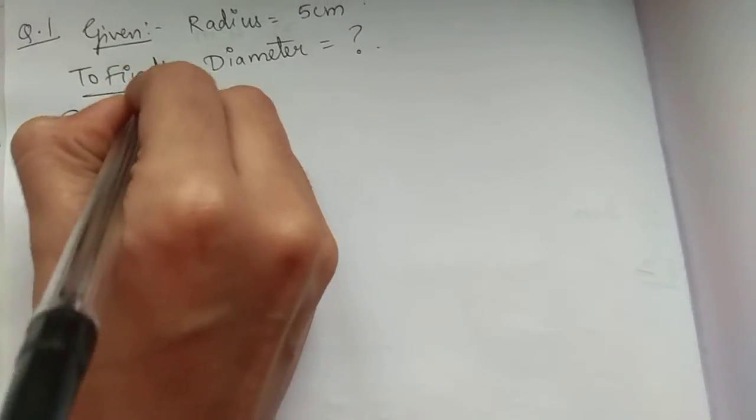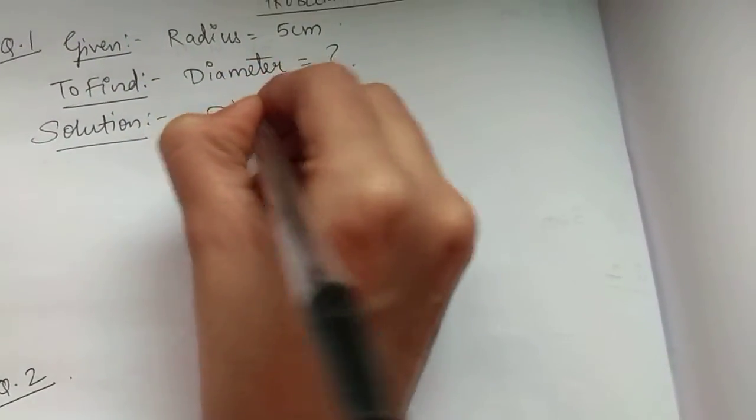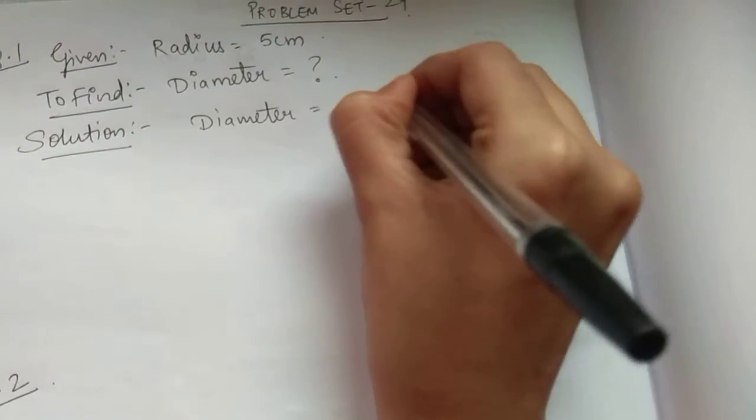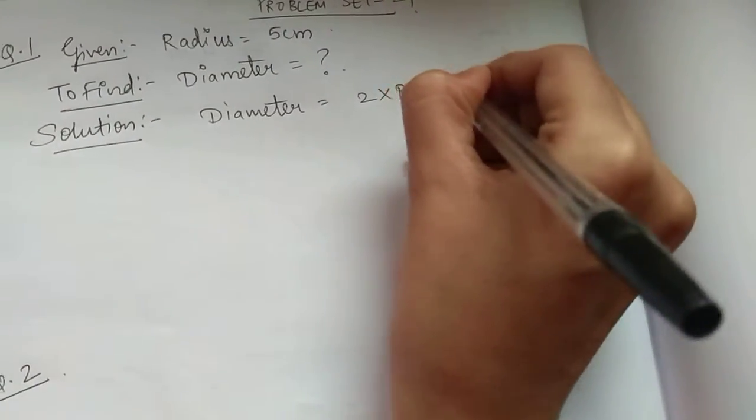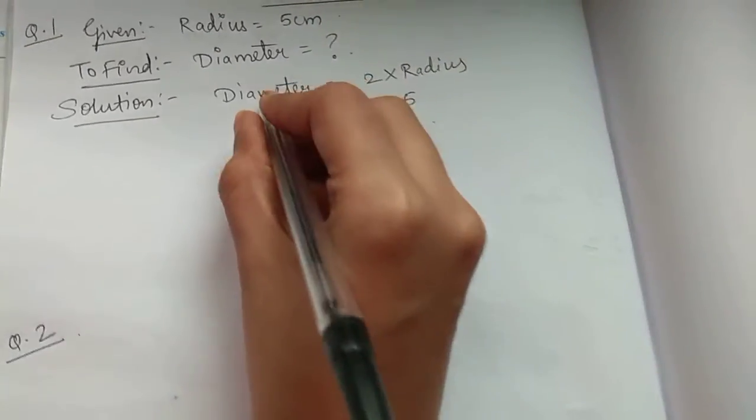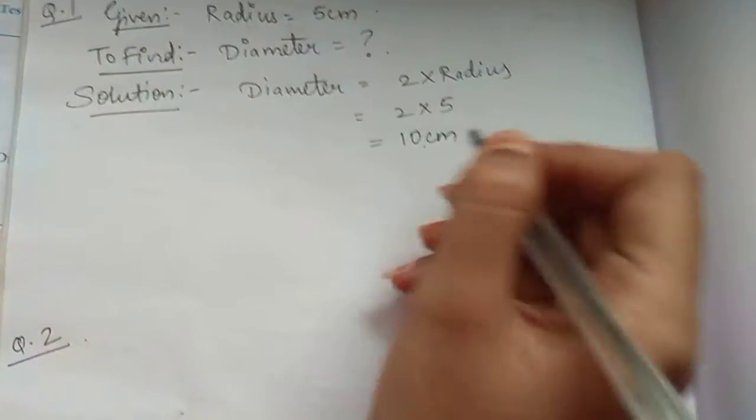Solution. In solution, directly we will apply the formula. So diameter equal to 2 multiplied by radius. So 2 into 5 gives us 10 cm. Therefore diameter is 10 cm.